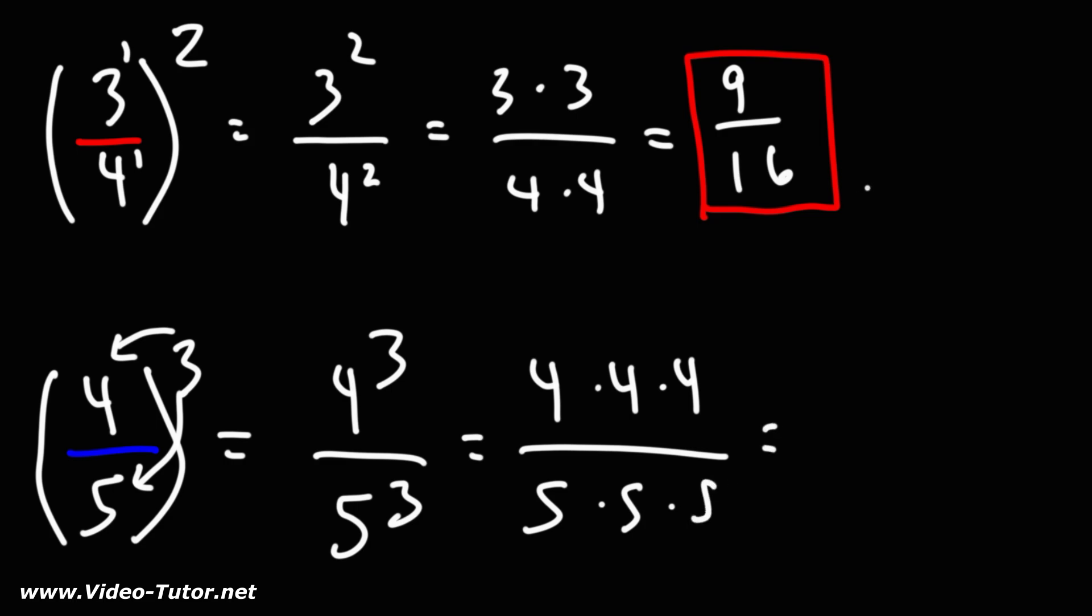4 times 4 is 16, times 4, that's 64. 5 times 5 is 25, times another 5, that's 125. So the answer is going to be 64 over 125.